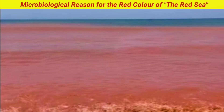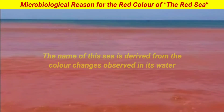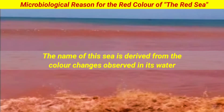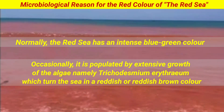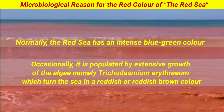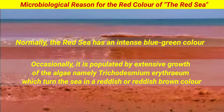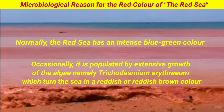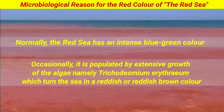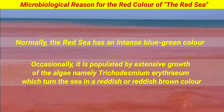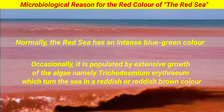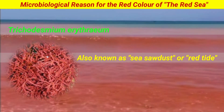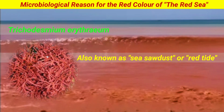Firstly, you should know that the name of Red Sea is derived from the color changes observed in its water. Normally, the Red Sea has an intense blue-green color. However, occasionally it is populated by extensive growth of an algae, namely Trichodesmium erythraeum, which turns the sea to a reddish or reddish-brown color. Trichodesmium erythraeum is also known as sea sawdust or red tide.